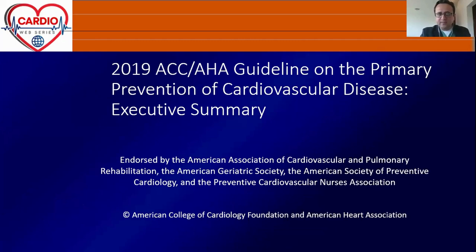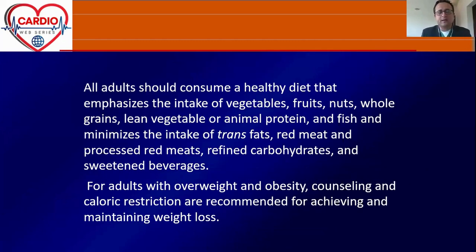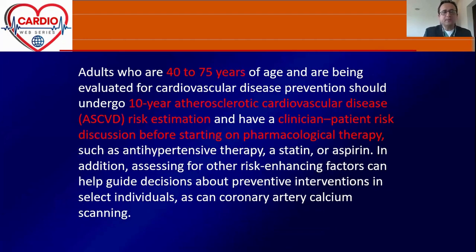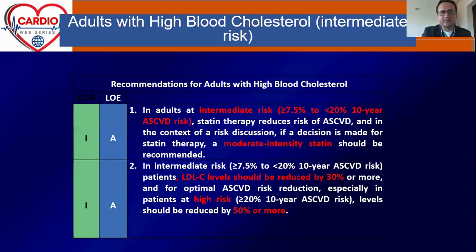Most of my slides come from the 2019 ACC guidelines. For primary prevention, one of the 10 recommendations is consuming a healthy diet — vegetables, fruits, nuts, less trans fats, red meat, and carbs. People aged 40–75 being evaluated for ASCVD should always have a clinician-patient risk discussion before starting any pharmacological therapy — whether aspirin, statin, or antihypertensive. Statin therapy effectively starts from intermediate risk and above.